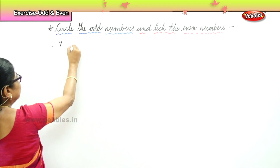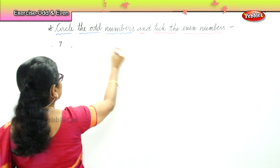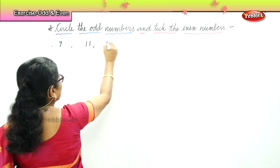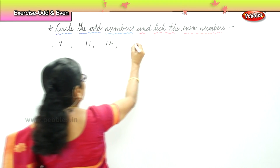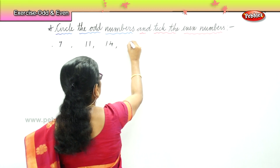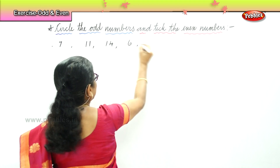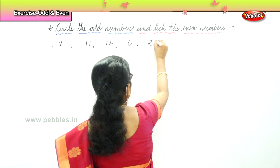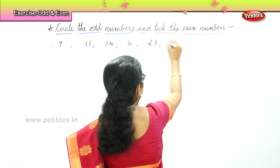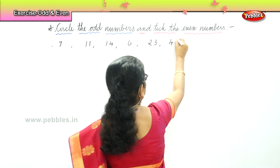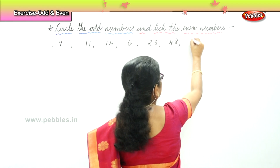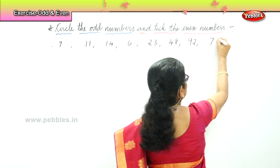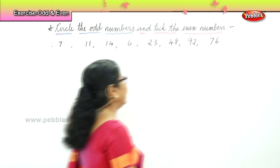Set A: You have 7, 11, 14, 6, 23, 48, 92, 76.